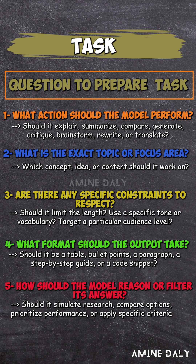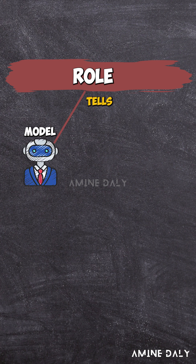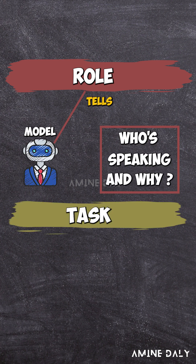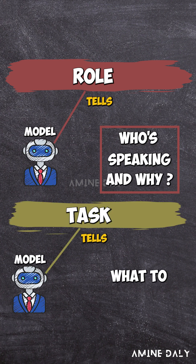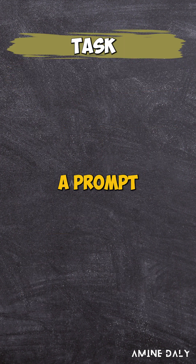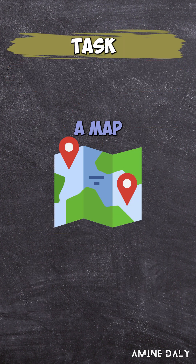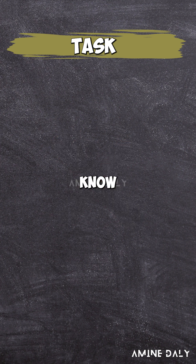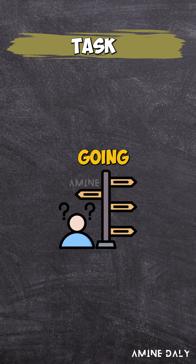You can save it if you need. And remember, the role tells the model who's speaking and why. The task tells the model what to deliver and how. A prompt without a task is like a map with no destination — the model moves, but it doesn't know where it's going.